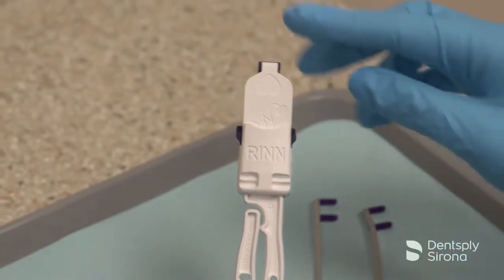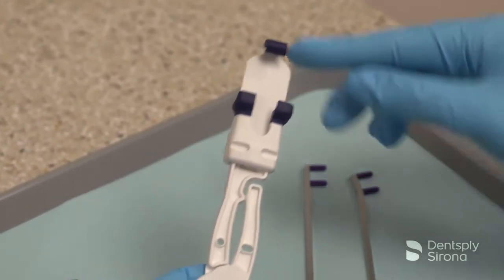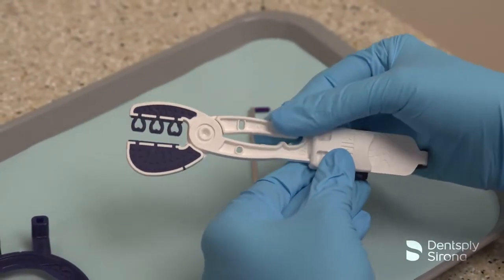The universal design works with all sensor sizes. It is autoclavable and has a rigid design which prevents flexing and a soft overmolding which is gentle to the sensor case.